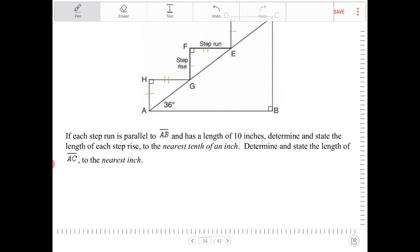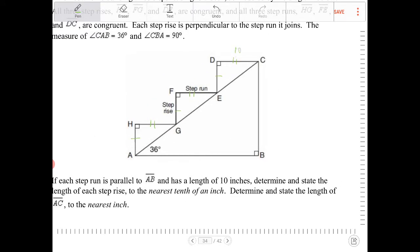If each step run is parallel to AB, if each step runs parallel to AB, yes, and has a length of 10 inches. So each one of these guys are 10 inches. So this is 10, 10 and 10.